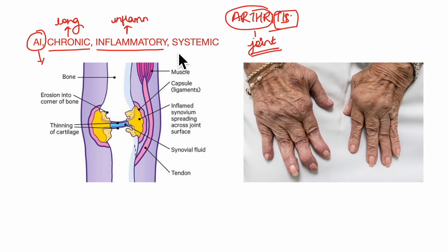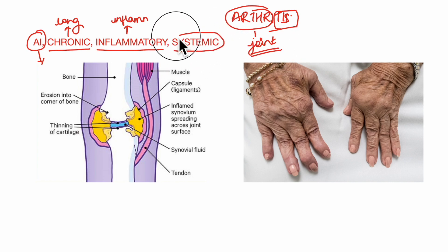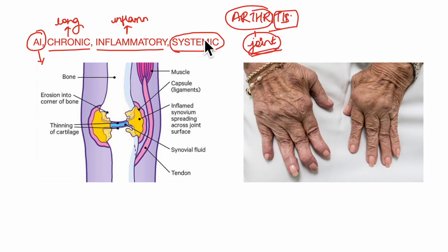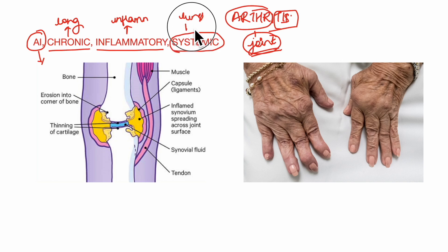Rheumatoid arthritis is also systemic — that is, although it mainly affects the joints, it can also affect other body systems, such as our lungs and heart. We will be learning about it in detail.